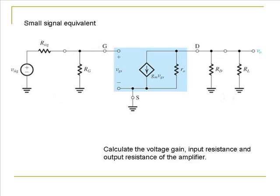From this small signal equivalent, we want to calculate the voltage gain, the input resistance, and the output resistance of the amplifier. Pause and solve for these values. If you have a problem, switch back to your notes from when we discussed small signal equivalent circuits of BJTs and look at how we calculated the voltage gain and the input and output resistance.